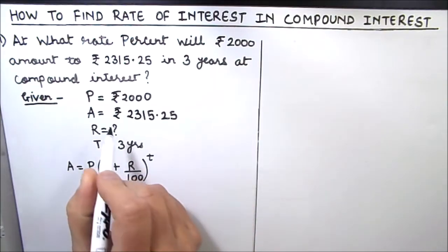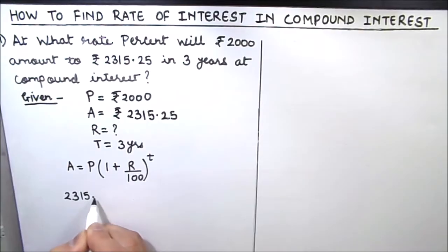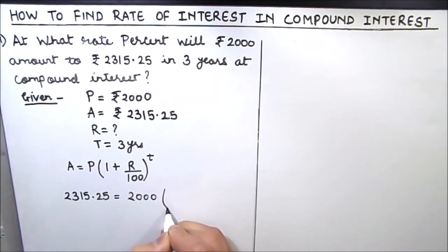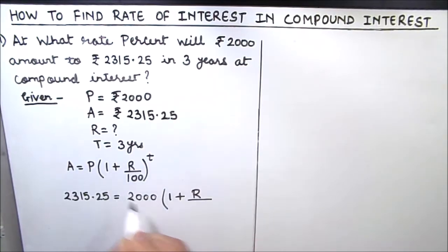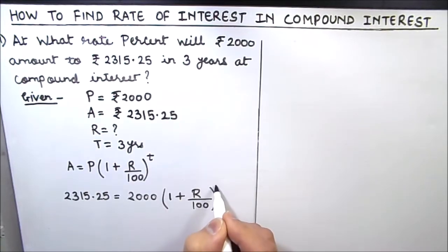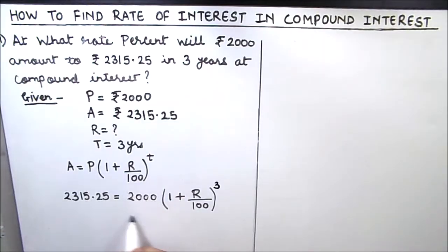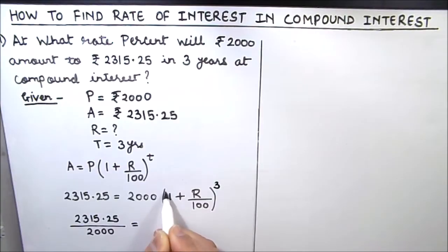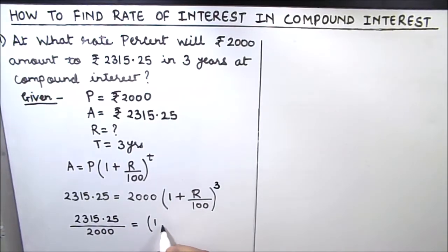Let us now put the values in the formula. Amount is 2315.25, principal is 2000 rupees, times 1 plus r divided by 100, raised to power t which is three years. Now we'll take 2000 to the left hand side, so this will be 2315.25 divided by 2000, equal to 1 plus r divided by 100, raised to power 3.